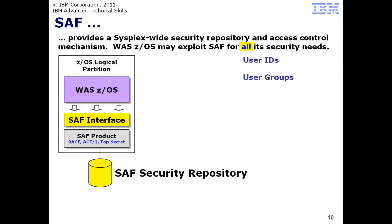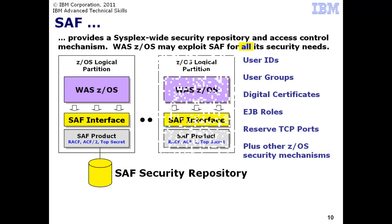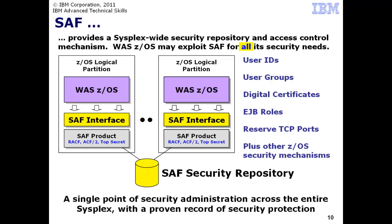It is also possible to have SAF be the repository for all WAS-ZOS security needs. That includes such things as user IDs and groups, digital certificates for encryption, application EJB role definitions, TCP port reservations, and a host of other ZOS-related purposes. In a Parallel SysPlex environment, the SAF interfaces on each logical partition may participate in a shared security repository, making defining and managing a consistent security policy much easier. By providing a single point of definition and management, the security enforcement role becomes more tightly controlled and therefore more secure.